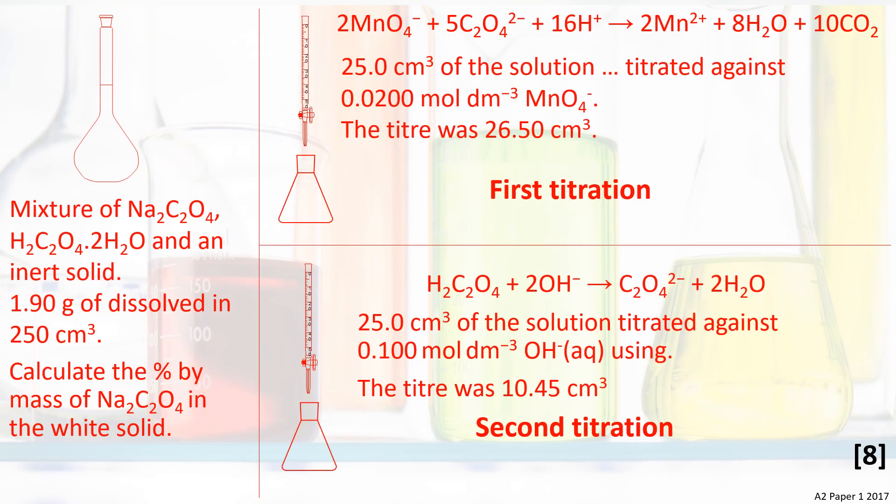There are three key parts of this question. First, a 250 cm³ solution is made containing sodium ethane dioate and ethane dioic acid dihydrate. 25 cm³ of this solution is titrated against manganate ions in the first titration. 25 cm³ of the same solution is titrated against hydroxide ions in the second titration.